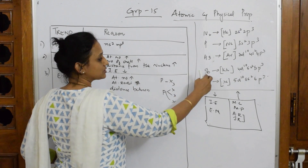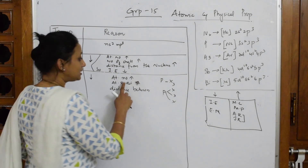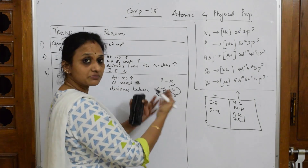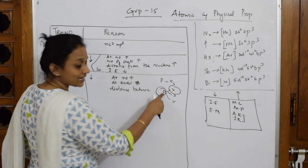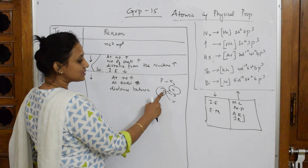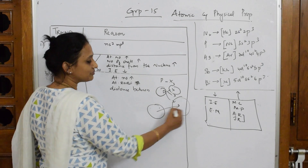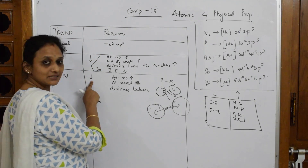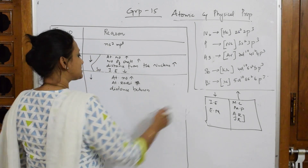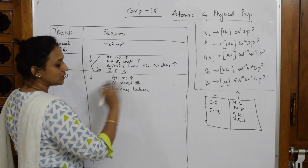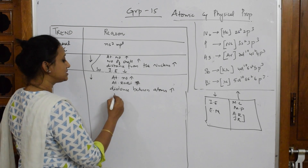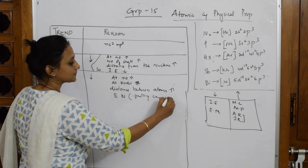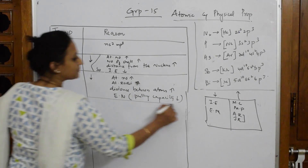As we go down the group, atomic number increases, atomic radii increases, and the distance between the bonded atoms becomes farther. When the atoms are farther apart, the ability to drag electron density towards itself — which is electronegativity — decreases. So: atomic number increases → atomic radii increases → distance between atoms increases → electronegativity or pulling capacity decreases.